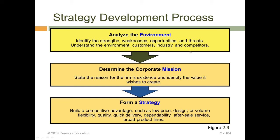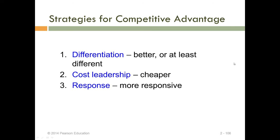The three key competitive strategies an organization can choose are: differentiation — being better or at least different in terms of product; cost leadership — being cheaper than the competition; and responsiveness — being more responsive to the market. A fourth option is best quality, or a combination of all these strategies.